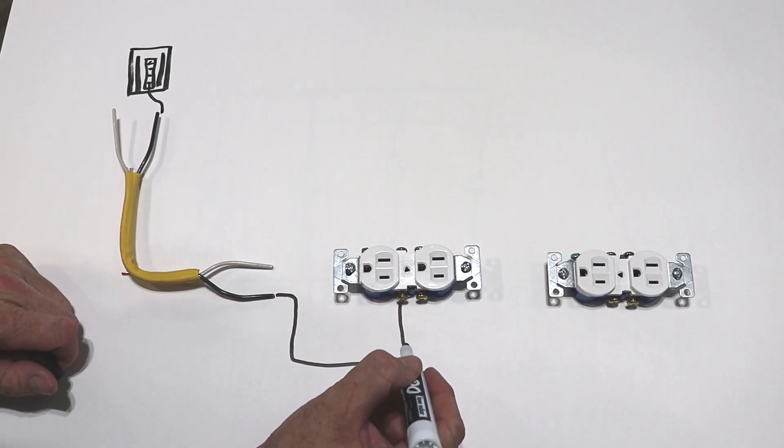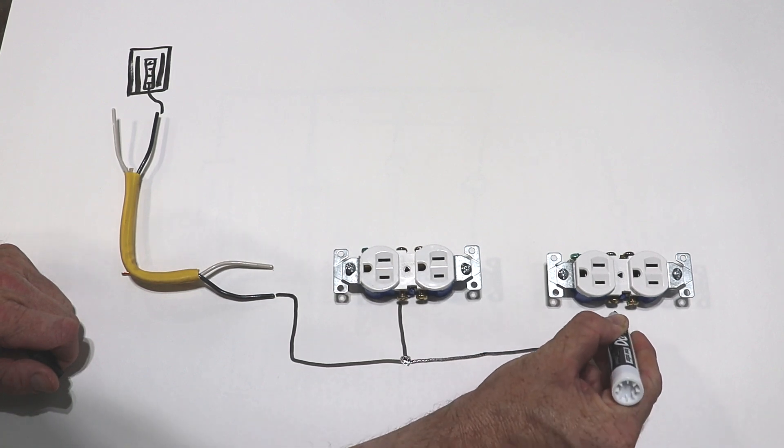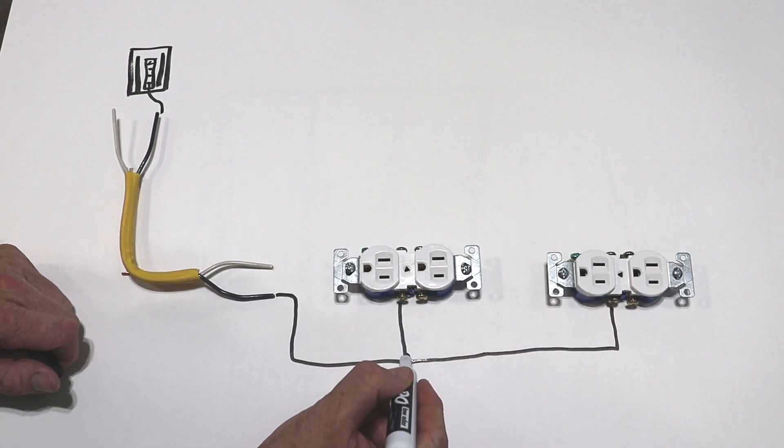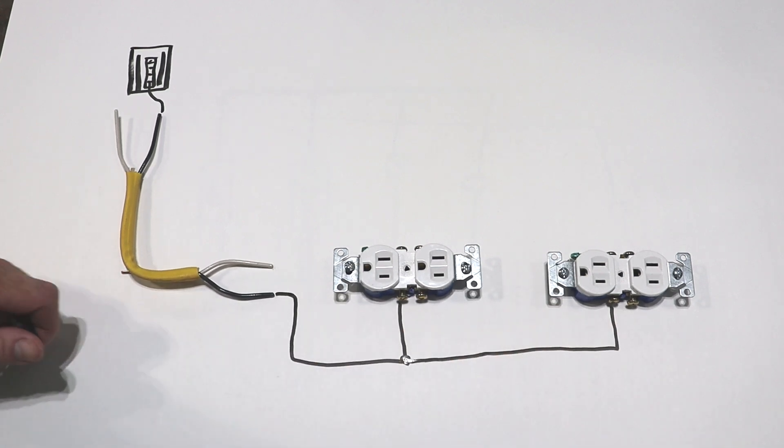Or I guess what I should say is, we're going to run the wire up to the box, and we're going to wire nut the wire so that there's a pigtail that comes off and joins the wire that goes on to the next outlet.